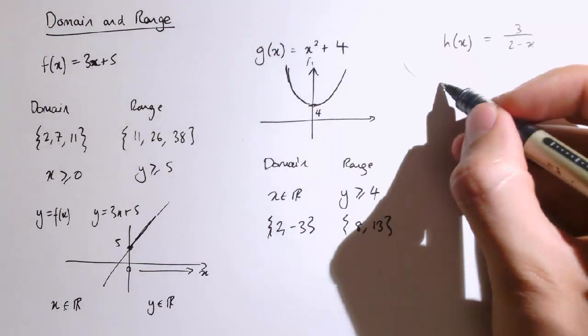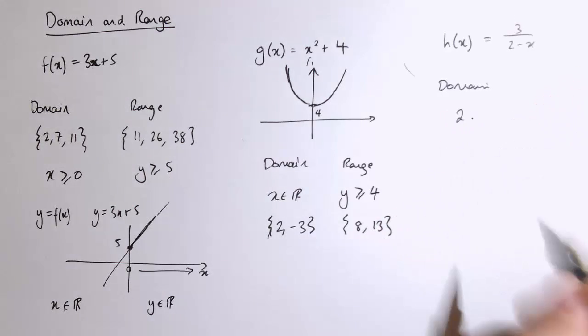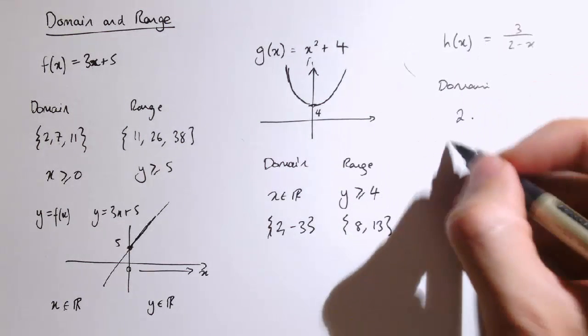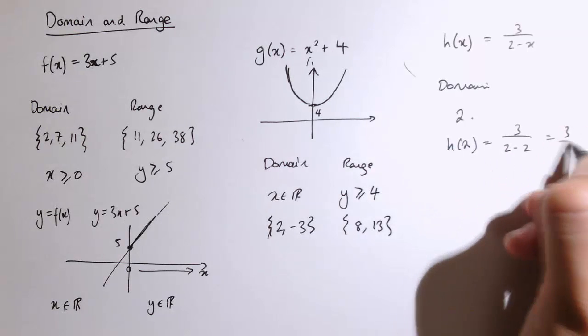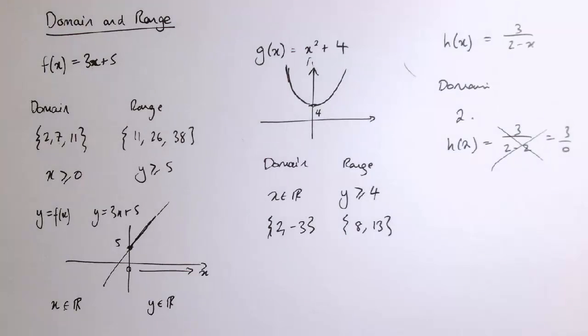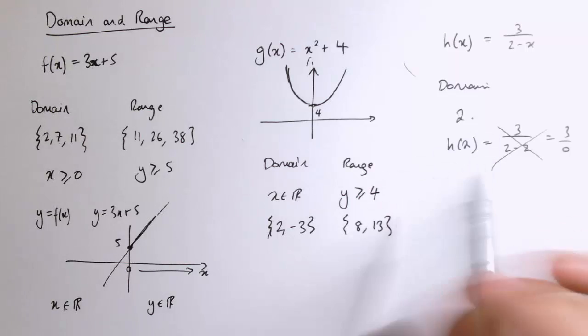In the domain we can never have 2, because h(2) would be 3 divided by 0. That doesn't make sense, that's not defined. So we're not allowed to have 2 in the domain of this function.